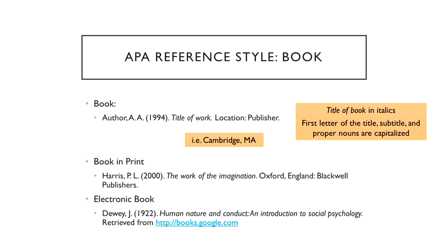How do you reference a book? A book also uses the author with abbreviated first initial and middle initial, then the year. The title of the book is also in italics, except only the first letter is capitalized. Then we have the location of where the book is published, colon, and the publisher. For an electronic book, the only difference is that after the title, because we don't have a physical location, you instead list 'retrieved from' and the URL where it's found.